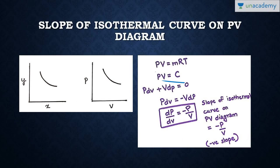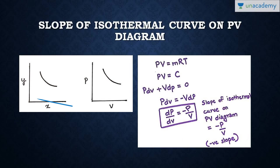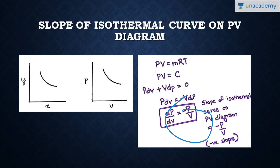Taking the derivative of both sides of PV = constant: P·dV + V·dP = 0, since the derivative of a constant is zero. To find the slope of a curve on a PV diagram, similar to finding dY/dX on a Y-X graph, we need to find dP/dV. From P·dV + V·dP = 0, we get dP/dV = −P/V, which is the slope of the isothermal curve on a PV diagram.